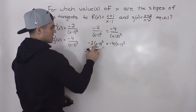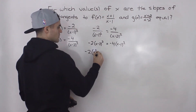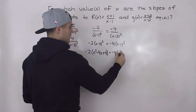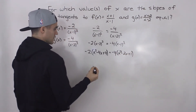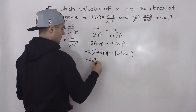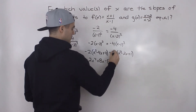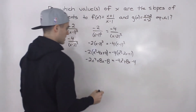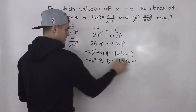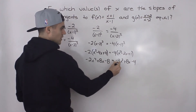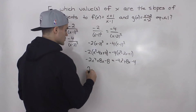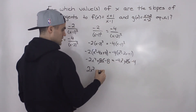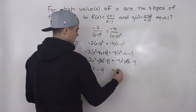We foil out (x-2) squared to get x squared minus 4x plus 4, and (x-1) squared to get x squared minus 2x plus 1. Distributing the negative 2 on the left gives negative 2x squared plus 8x minus 8, and distributing negative 4 on the right gives negative 4x squared plus 8x minus 4. Bringing everything to one side: 2x squared minus 4 equals 0.